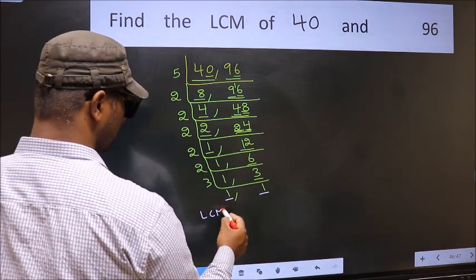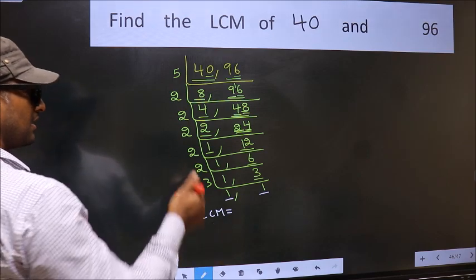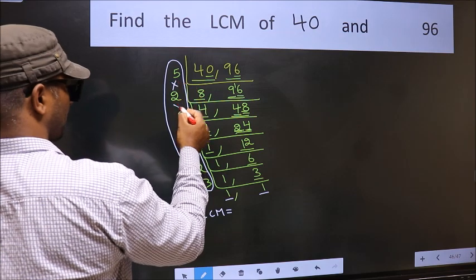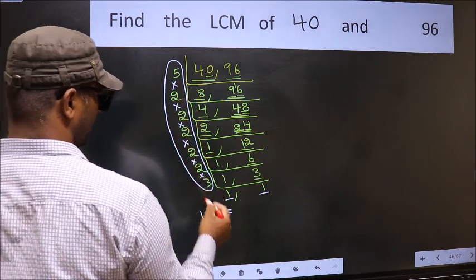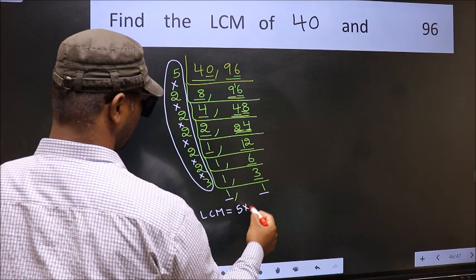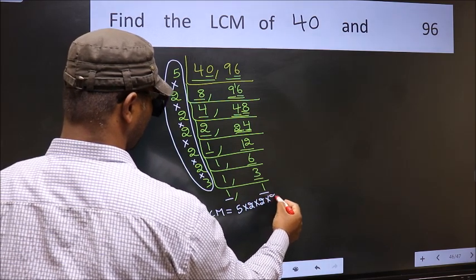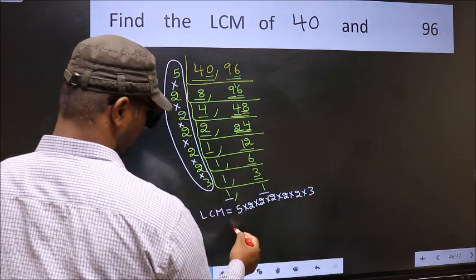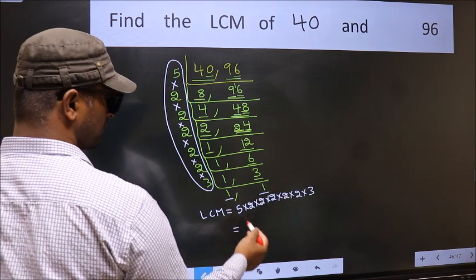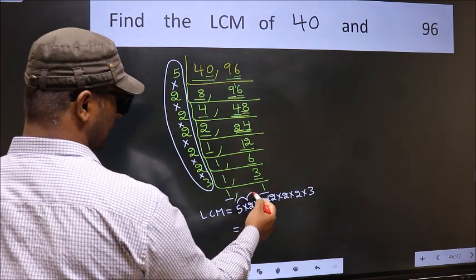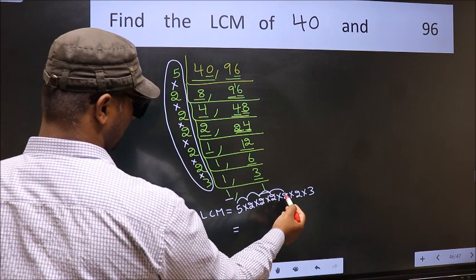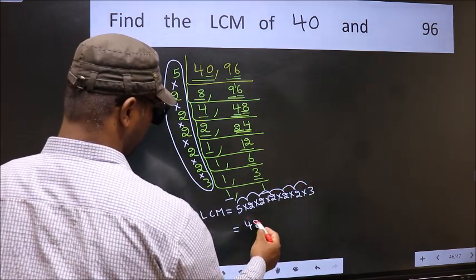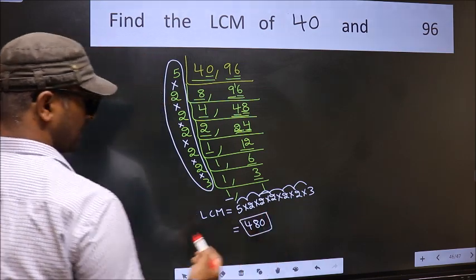So our LCM is the product of these numbers: 5 times 2 times 2 times 2 times 2 times 2 times 2 times 3. Let us multiply these: 5 times 2 is 10, times 2 is 20, times 2 is 40, times 2 is 80, times 2 is 160, times 3 is 480. This is our LCM.